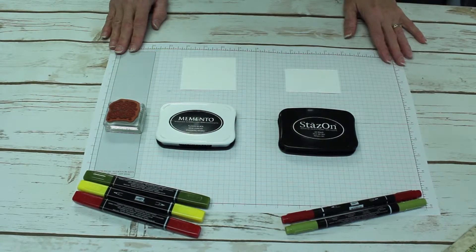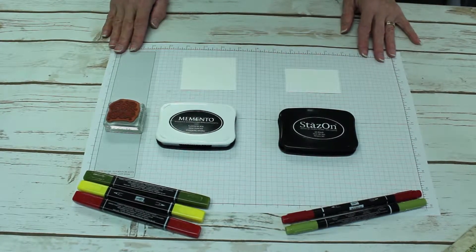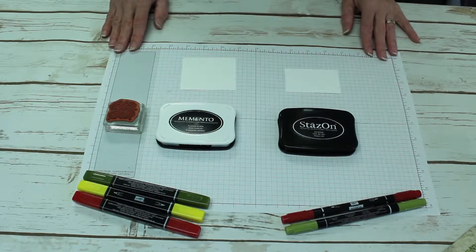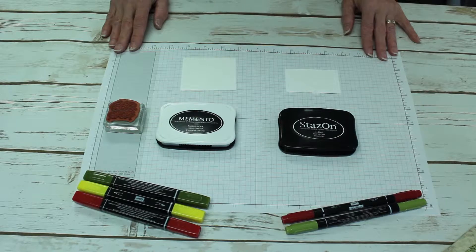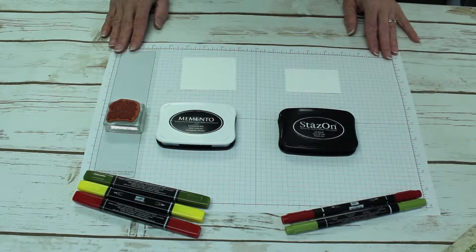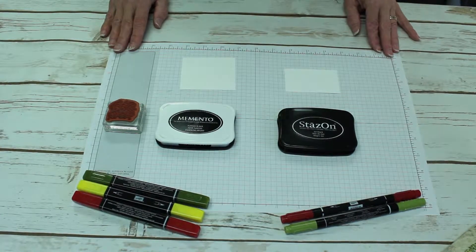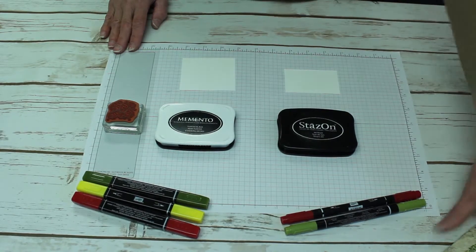StazOn is a solvent ink, it's a permanent ink. Once it dries, it will not smudge or smear and it can be used on a variety of surfaces. You can do things like stamp on this tile, color it, and then use a sealant on it to make a nice coaster.